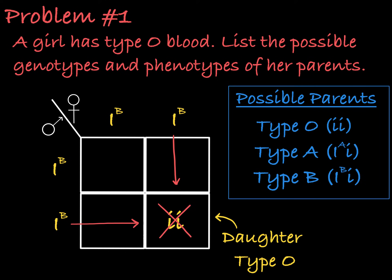So her parents can have type A, type B, or type O blood. But if they are type A or type B, they must be heterozygous and able to pass on the recessive little i allele.